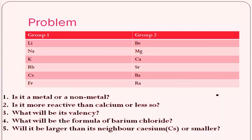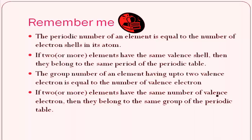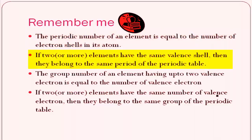By this approach, we can always predict the properties of an element using the periodic table. Now in conclusion, let's remember some key points. First: the period number of an element is equal to the number of electron shells in its atom. For example, if the atom has two electron shells, K and L, then it belongs to the second period.